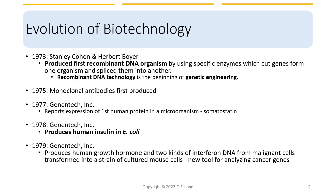In 1973, Cohen and Boyer produced the first recombinant DNA organism, starting the beginning of genetic engineering. The two scientists removed a plasmid — a small ring of DNA located in a cell's cytoplasm, not the nucleus — from a cell. They then used restriction enzymes to cut the DNA at precise locations and recombined the DNA strands in a special configuration. Finally, Cohen and Boyer inserted that spliced DNA into E. coli bacteria cells, which reproduced the altered DNA. With the altered DNA, the bacteria cells could be made to produce specific proteins.